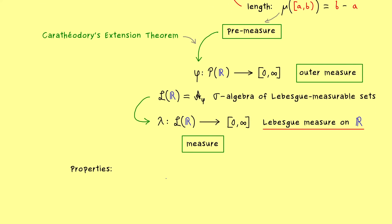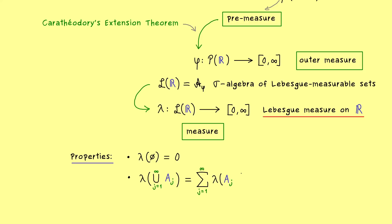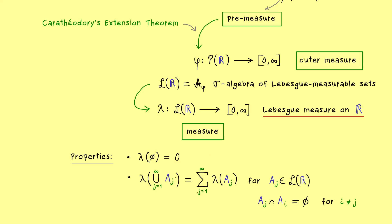A measure has two defining properties. First, it needs to map the empty set to zero. Second, it has to be sigma additive. The meaning of sigma additivity is: if we put in a countable union into lambda, then a sum or series comes out. More precisely, we have the sum over j from 1 to infinity of lambda of A_j. The sets A_j must be Lebesgue measurable and pairwise disjoint — meaning that for two different indices the intersection is always the empty set.